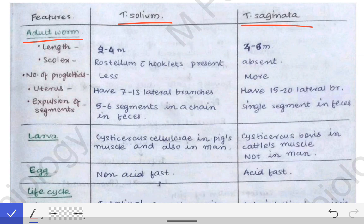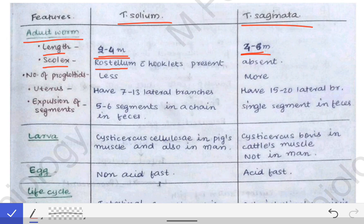The length of the adult worm of Taenia solium is 2 to 4 meters, but in the case of Taenia saginata it is 4 to 6 meters. The scolex in Taenia solium possesses a rostellum with hooklets, but the rostellum with hooklets is absent in Taenia saginata.